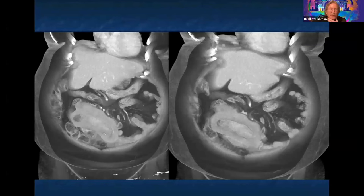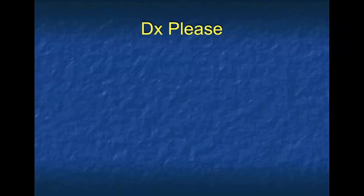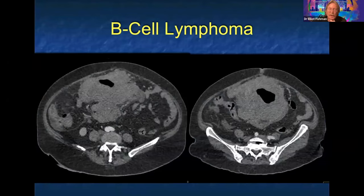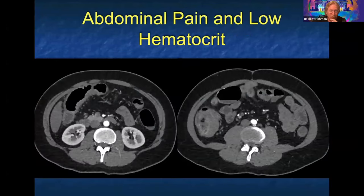Similar but different — another patient with abdominal pain. Answers: GIST and lymphoma. This was B-cell lymphoma. It's much bulkier — I think that's one helpful thing with lymphoma. You often see nodes but not always, but the bulkiness is key. Small bowel lymphoma.